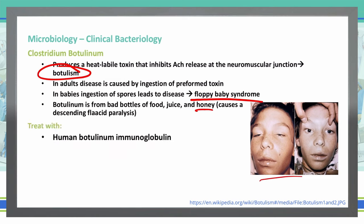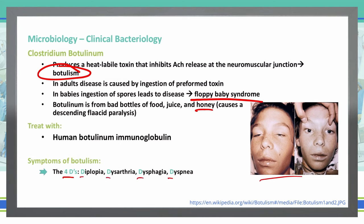How do we treat it? We treat with human botulinum immunoglobulin. The symptoms associated with botulism are the four Ds: diplopia, dysarthria, dysphagia, and dyspnea.